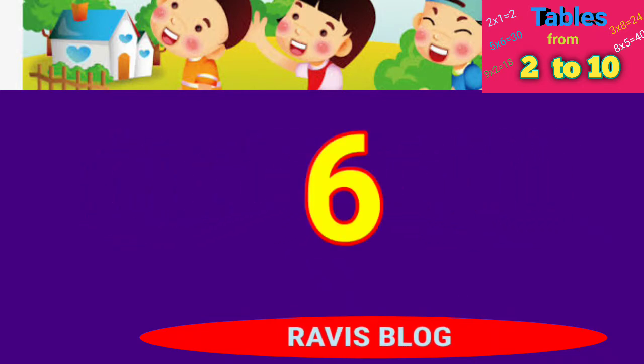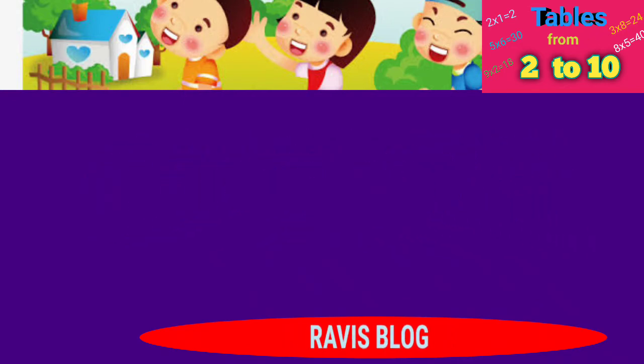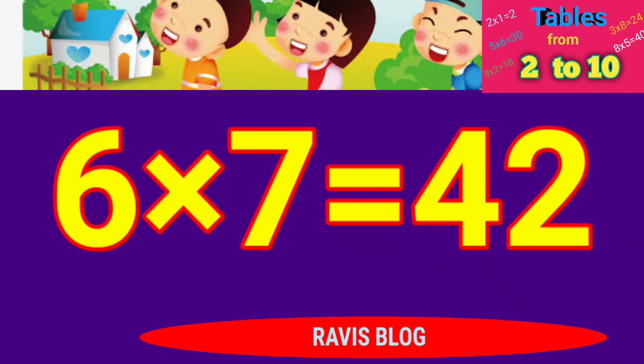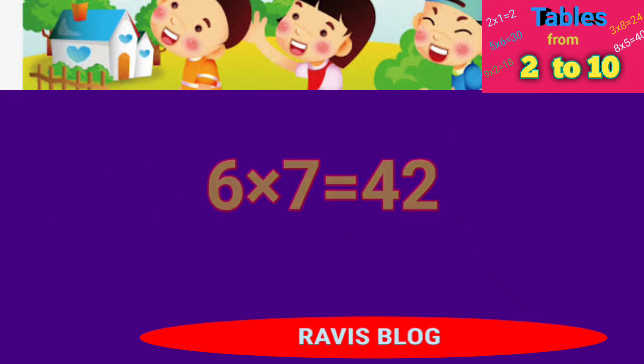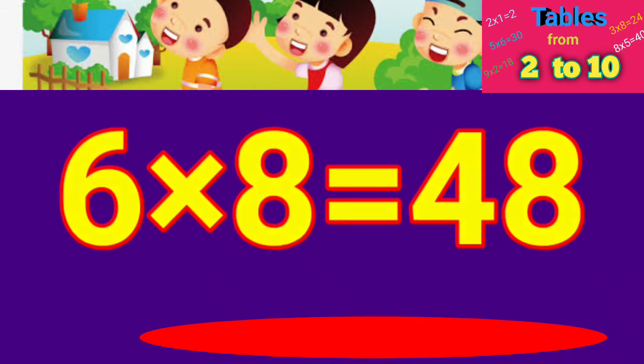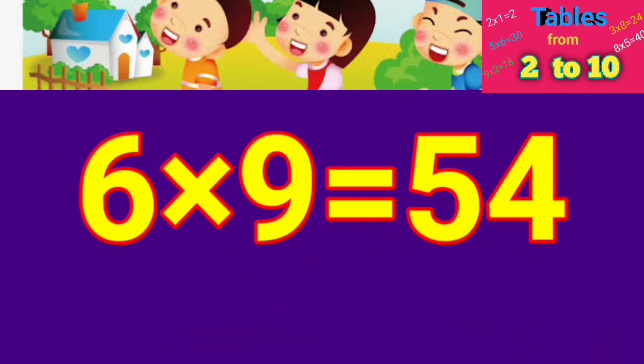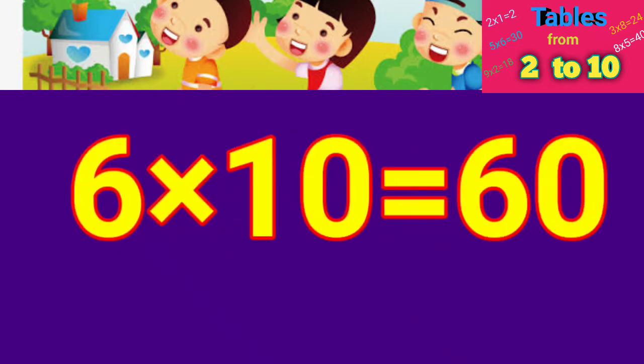Six six's are thirty-six, six seven's are forty-two, six eight's are forty-eight, six nine's are fifty-four, six ten's are sixty.